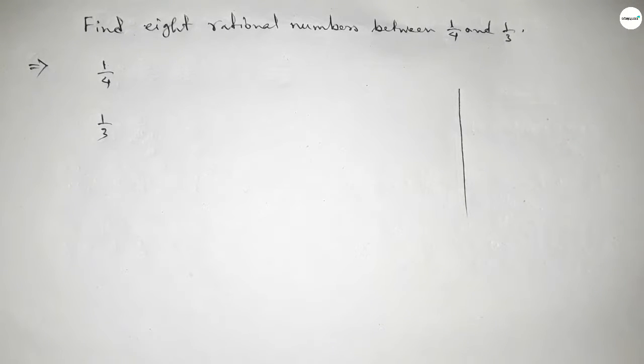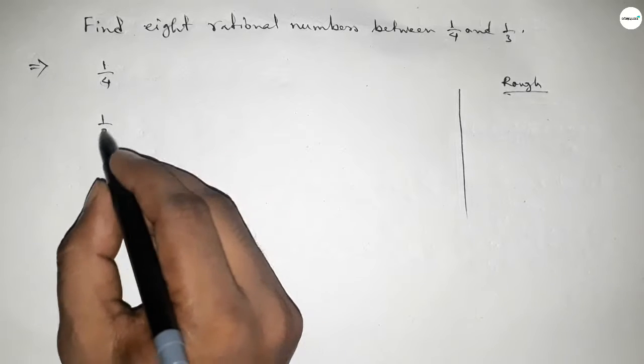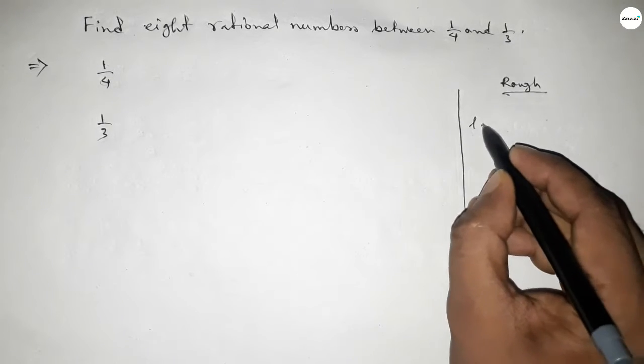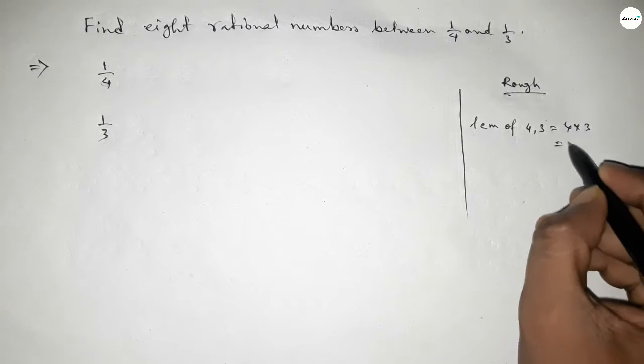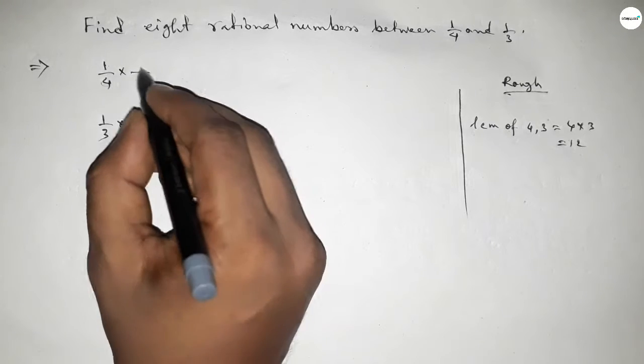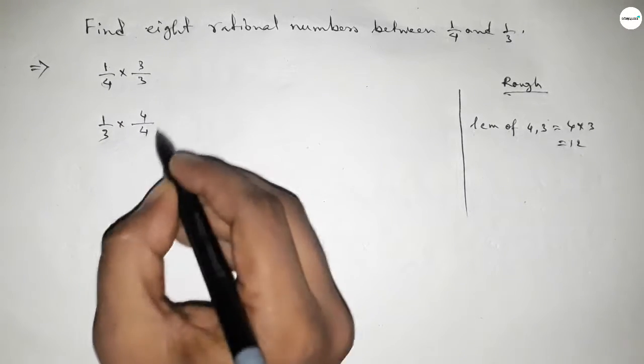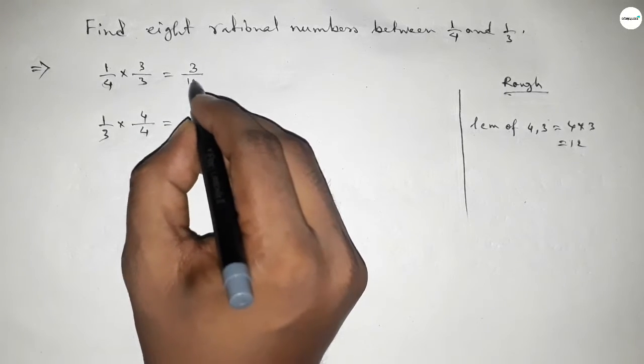Now, the denominators of both are not equal, so we have to find out the LCM of 4 and 3. Their product is the LCM, which is 12. We should multiply by 3 here and by 4 here, then we can get the denominator of both as 12. So this is 3/12 and this is 4/12.